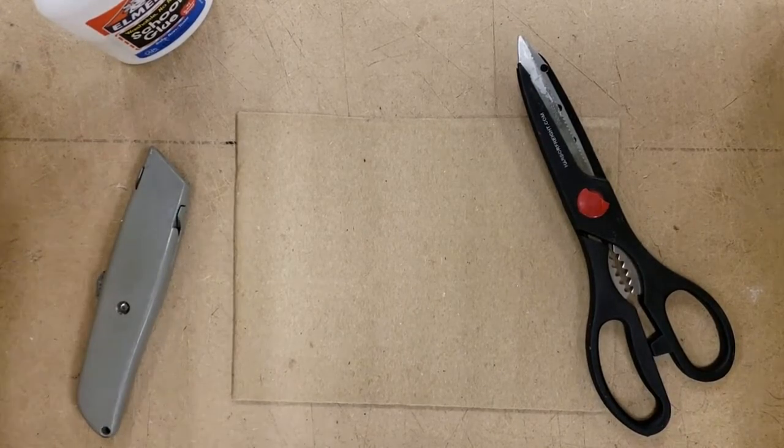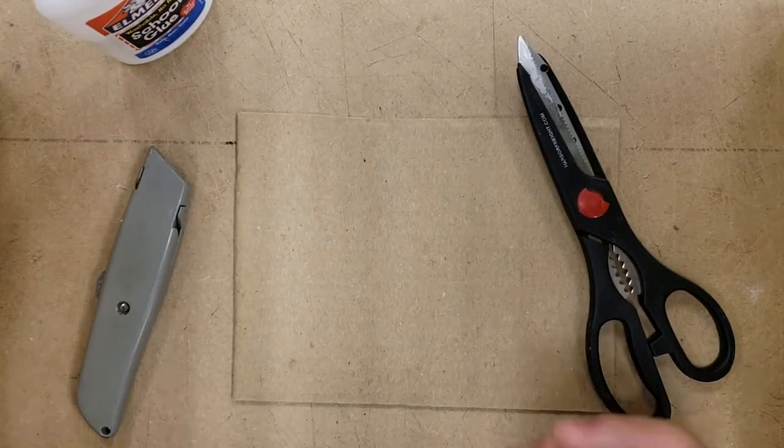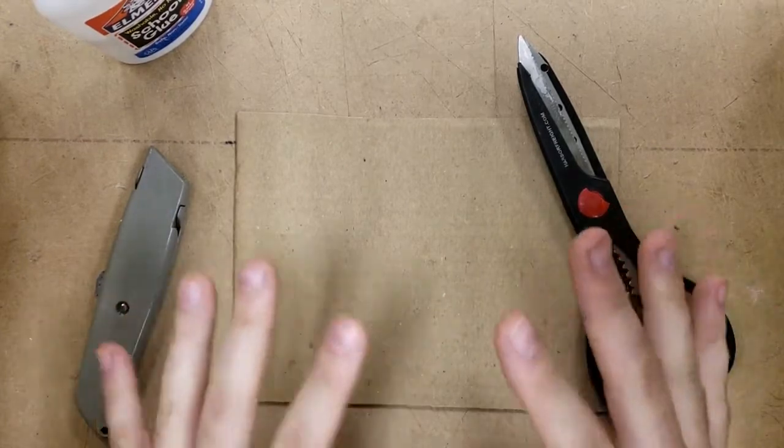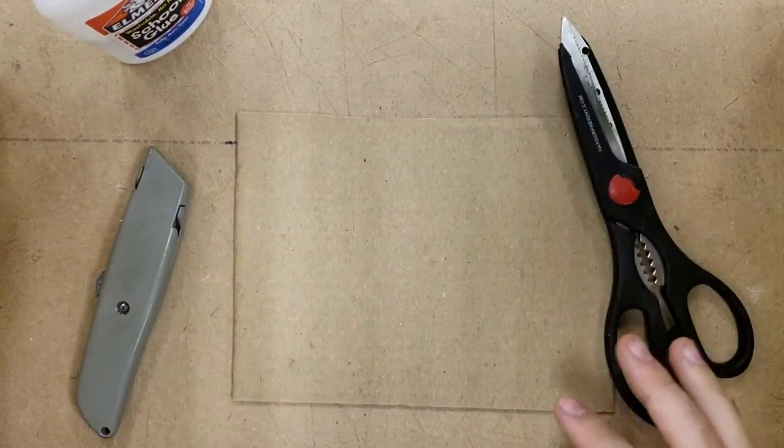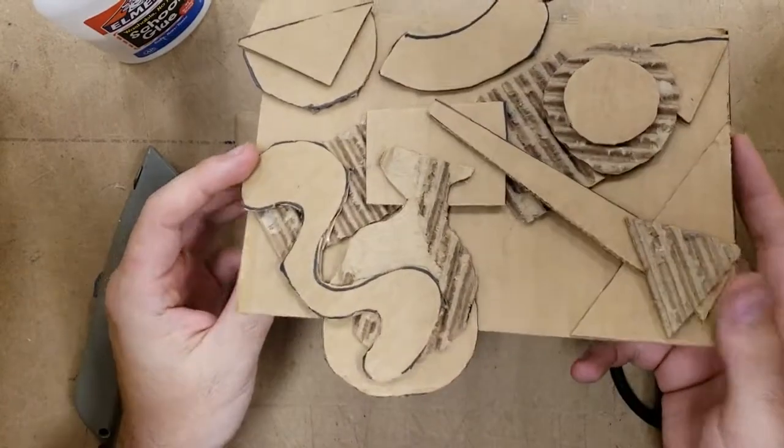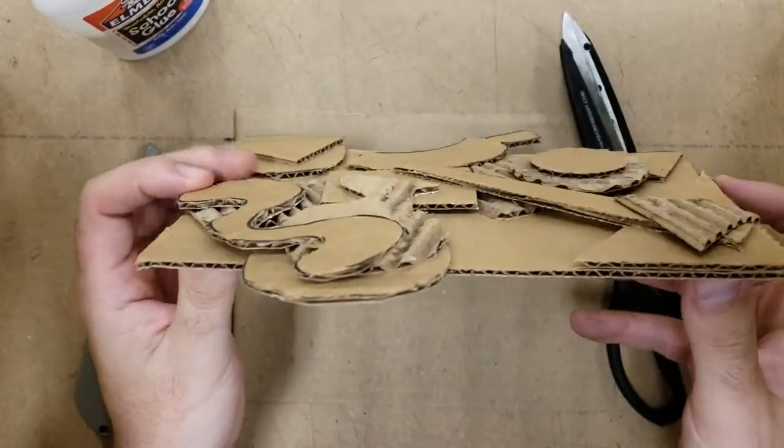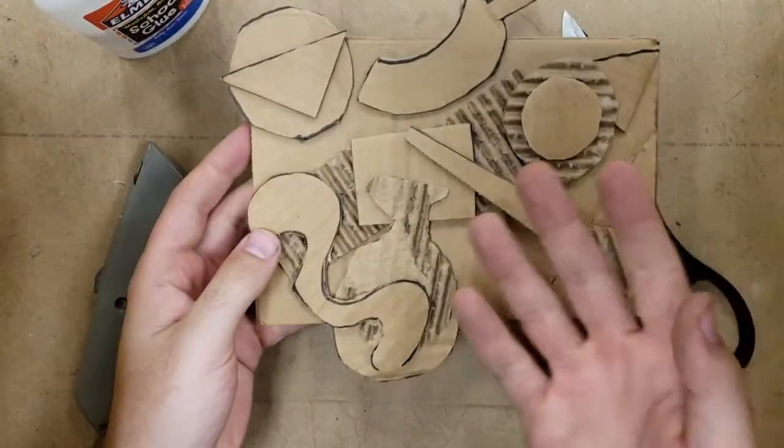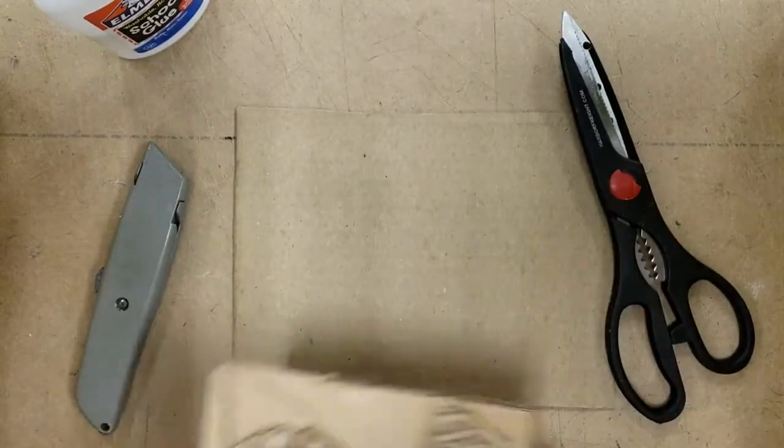Now a relief sculpture is anything that comes off of the page just a little bit. We're not making something that's totally 3D for this project, but just comes off a little bit so it's just barely coming off the page. It's a little bit 3D but not by a whole lot.